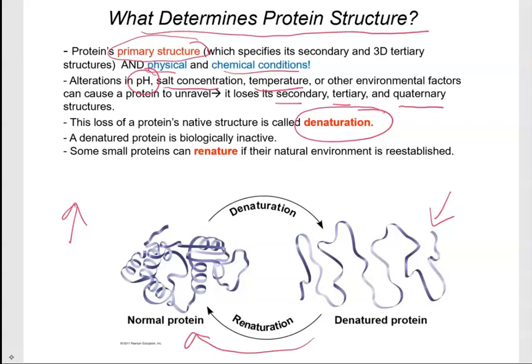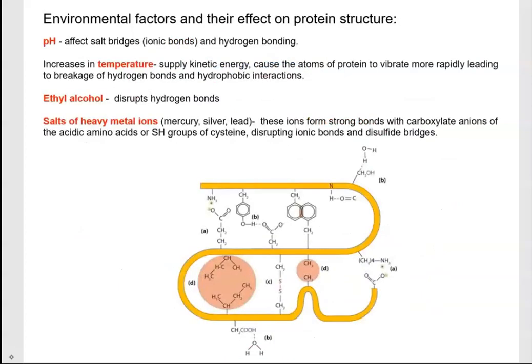I want to point out specific environmental factors and what effect they have on protein structure. When discussing denaturation, you should be specific about what bonds are being disrupted in the quaternary, tertiary, and secondary structures. You can pause here and review what happens when you change the pH, the temperature, when a protein is exposed to alcohol, and when it's exposed to salts of heavy metal ions.